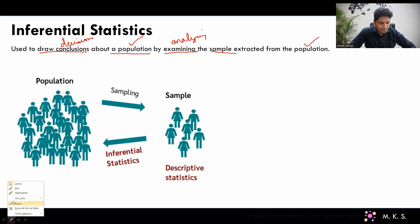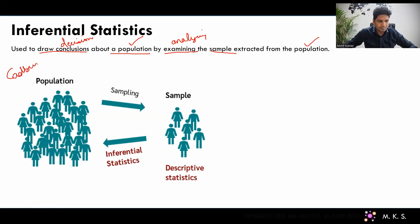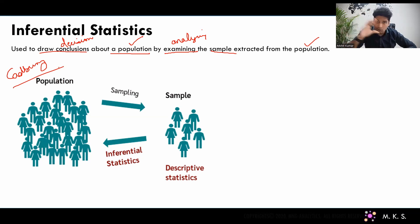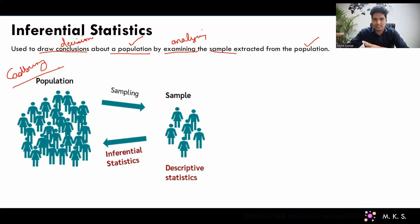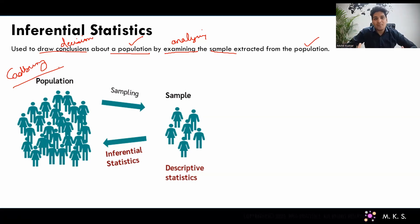Let's take an example of a chocolate manufacturing company — let's say Cadbury. They want to find out what is the average weight of their chocolate. For that purpose, they would have to collect all the chocolates they have manufactured, find out the weight of all of those chocolates, and then average them. That's the ideal calculation of average weight of the Cadbury chocolate. But is it possible? It's not possible because they cannot collect data of all those chocolates.